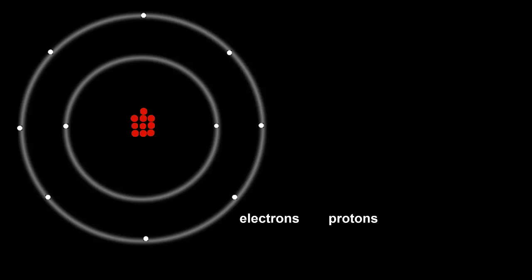Can you guess what might happen if we had another proton and electron? Where would the electron go? And what element is this?